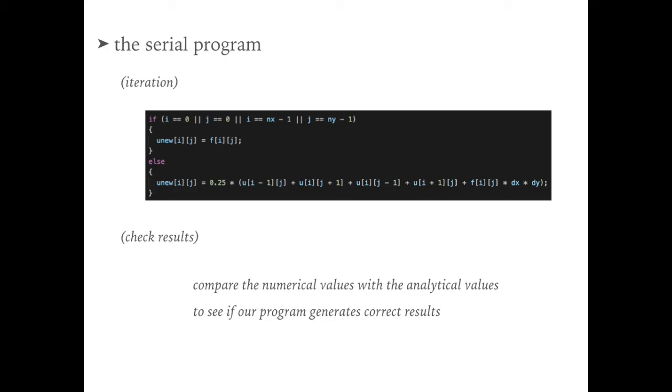The next step is to do the iteration. For this example, if cells are located at the boundary positions, we can use f(x,y) that we calculated before. But for other positions, we can use the Jacobi method to update corresponding values.